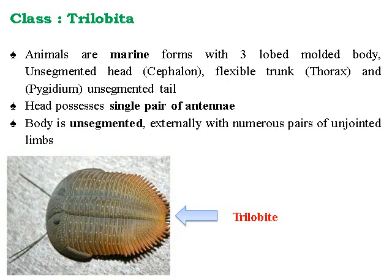Class Trilobita — these animals are marine forms with a three-lobed body, an unsegmented head called the cephalon, a flexible trunk (thorax), and an unsegmented tail (pygidium). The head possesses a single pair of antennae. The body is externally unsegmented with numerous pairs of unjointed limbs. The example shown in the image is the trilobite.